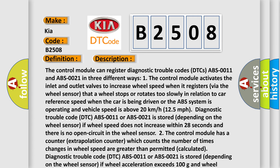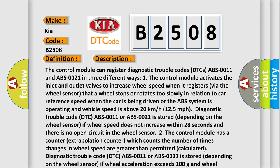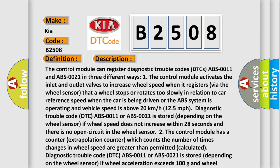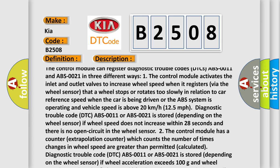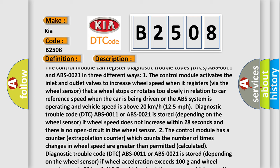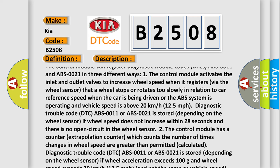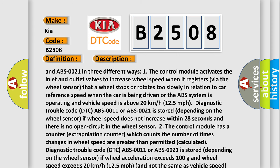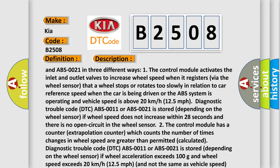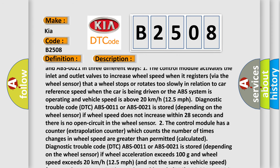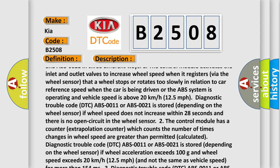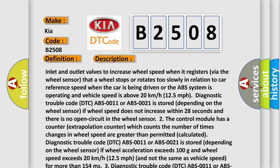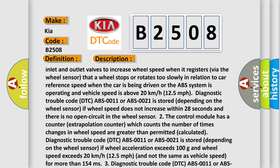The control module activates the inlet and outlet valves to increase wheel speed when it registers via the wheel sensor. The wheel stops or rotates too slowly in relation to car reference speed when the car is being driven or the ABS system is operating and vehicle speed is above 20 kilometers per hour (12.5 miles per hour). Diagnostic trouble code DTC ABS-0011 or ABS-0021 is stored depending on the wheel sensor.